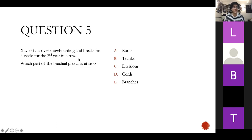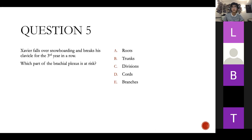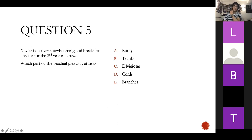Question five: Xavier breaks his clavicle snowboarding. Which part of the brachial plexus is at risk? The answer is C — divisions. To clarify: your roots are in the posterior part near the spinal cord; trunks are in the lateral aspect of your neck; divisions are under the clavicle; cords are along the axillary artery; and branches go from there.